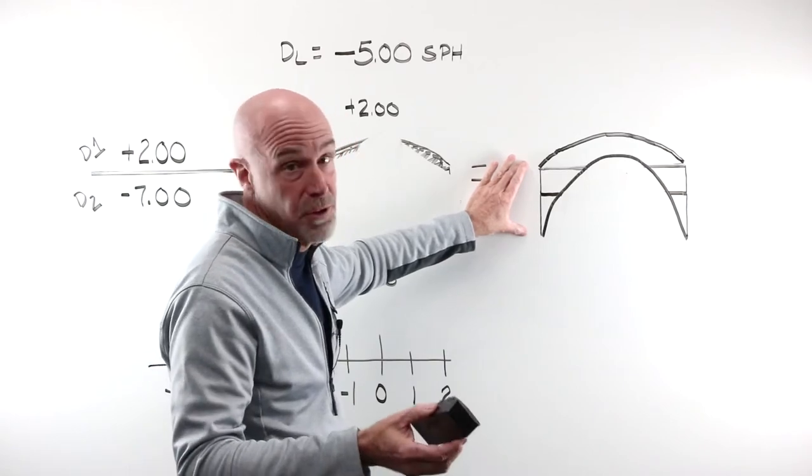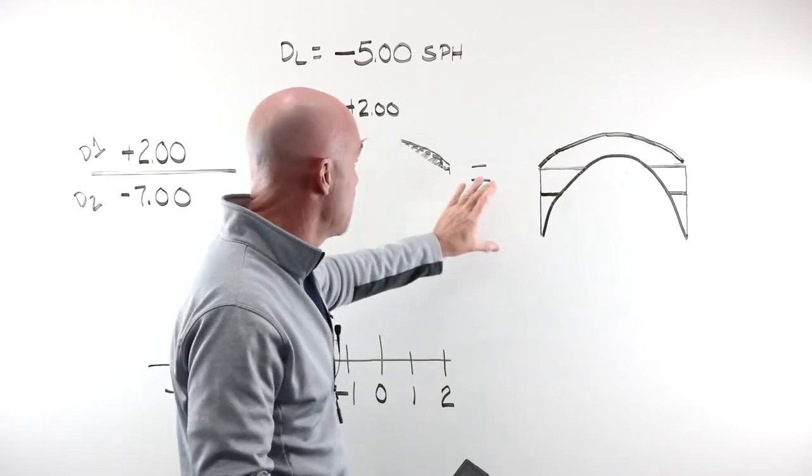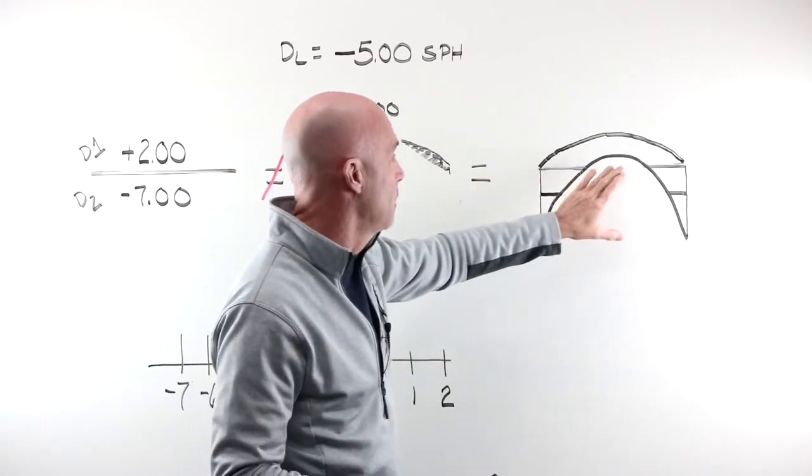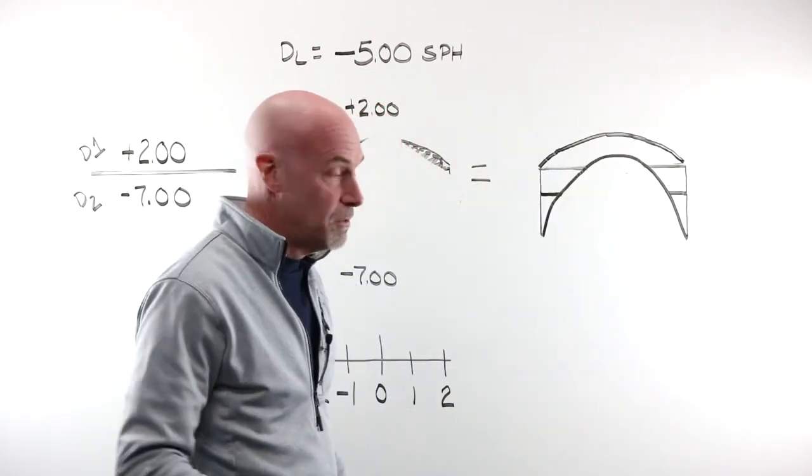That is why lens blanks appear so incredibly thick. You're gonna see in a lab video that's coming out next month, they're very large, they're very thick, and that is because we have to have enough material here to grind away the minus seven.